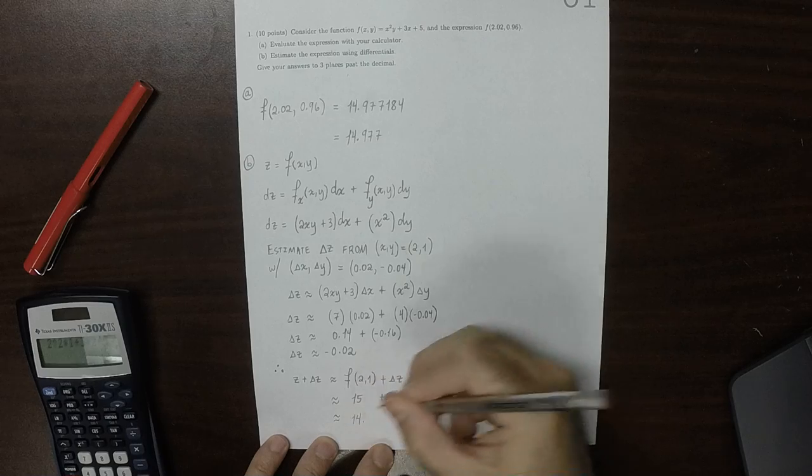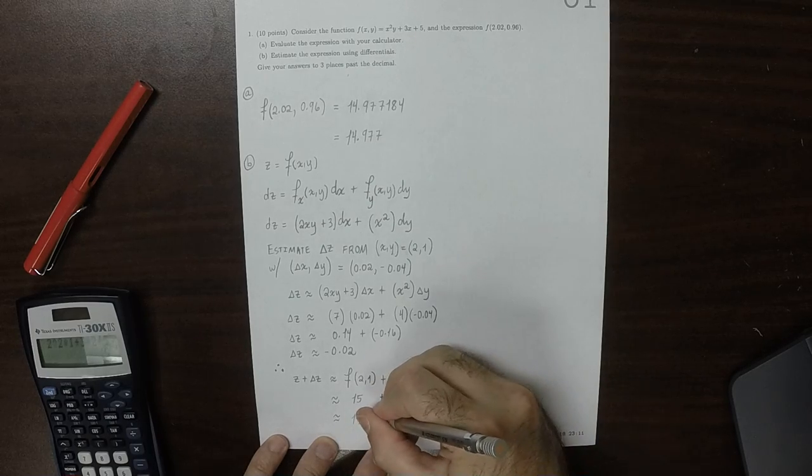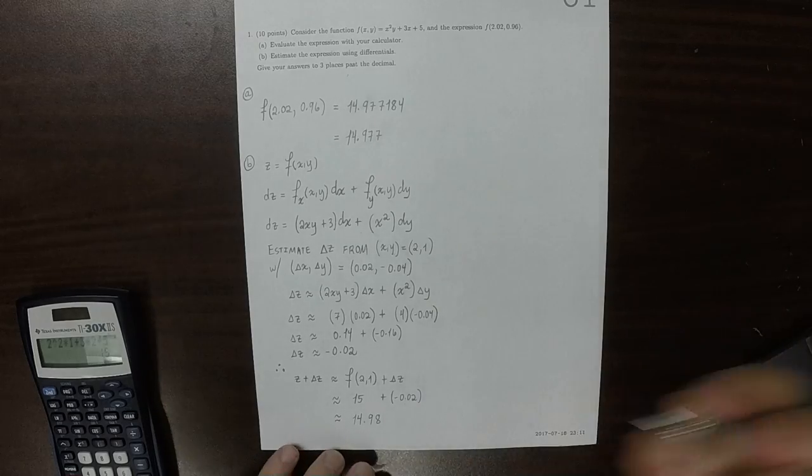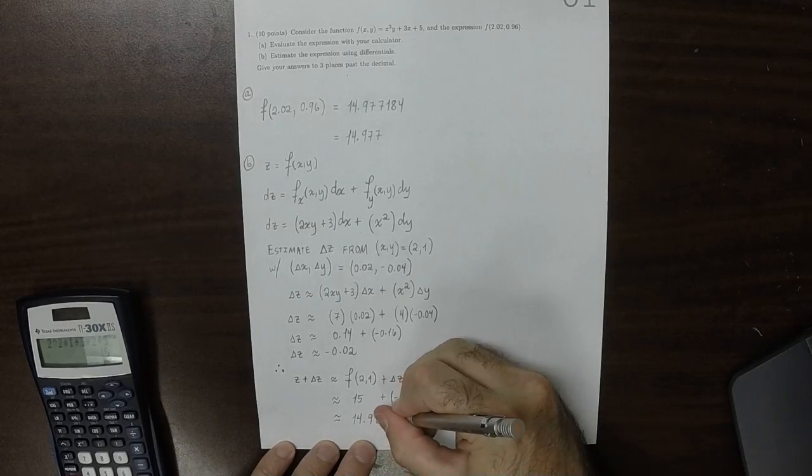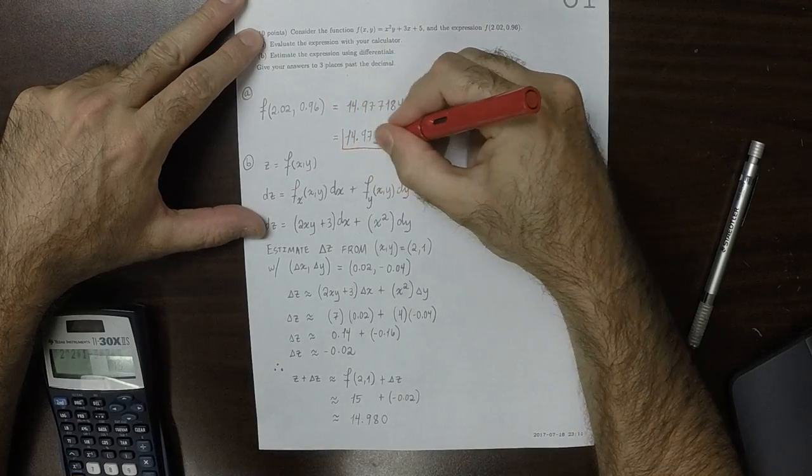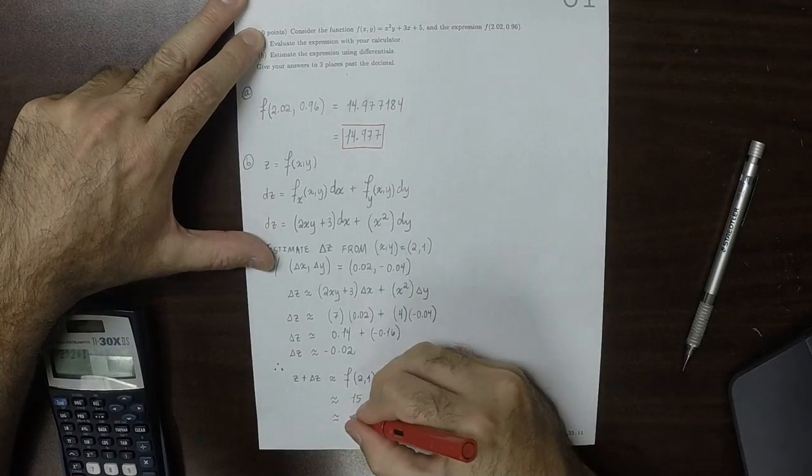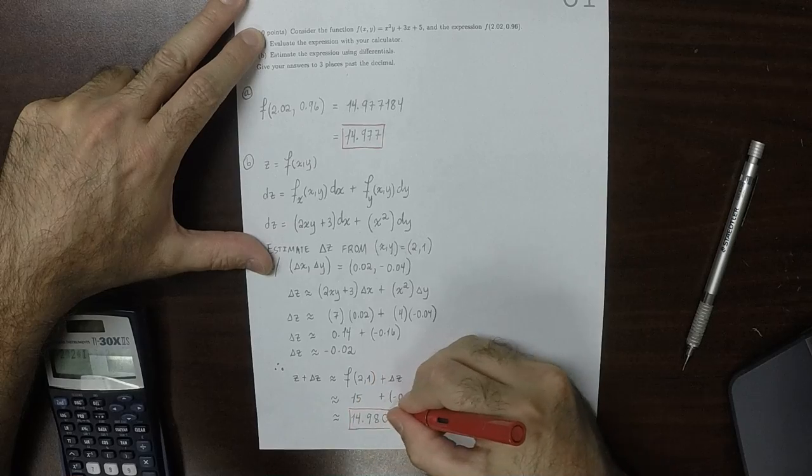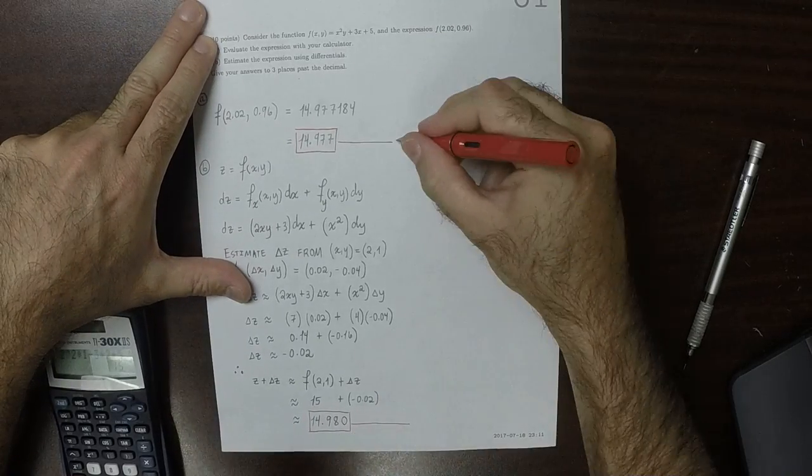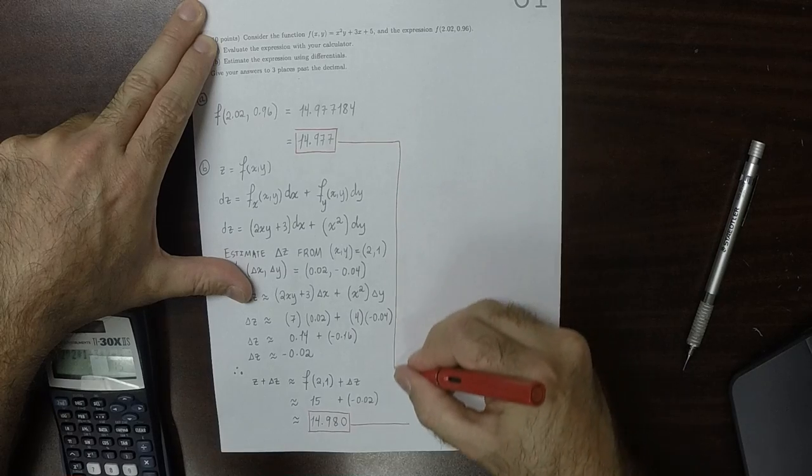That gives 14.98. And then to make it 3 places past the decimal, like so.